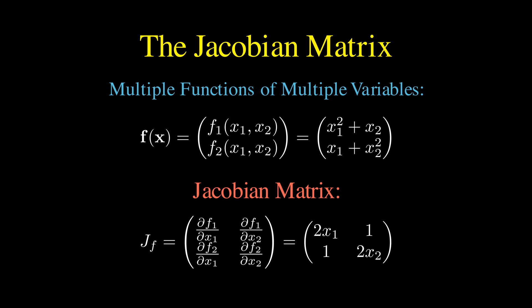Since we have two functions and two variables, we get exactly four partial derivatives. The partial of the first function with respect to the first variable, the partial of the first function with respect to the second variable.